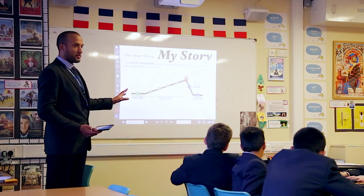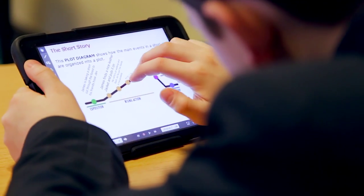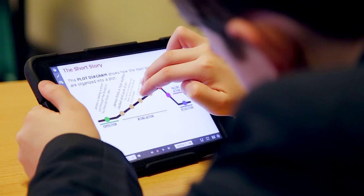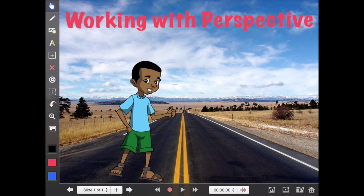Explain Everything is a whiteboard and screencasting app which allows teachers and students to draw, annotate and analyze words, pictures and moving images. What sets it apart from other annotation apps like Skitch is that you can record everything that you do into a video which you can then share with others.